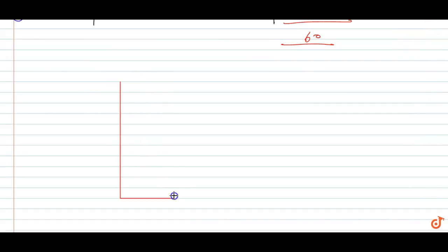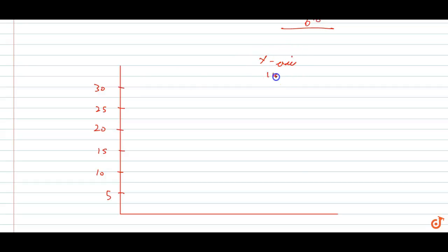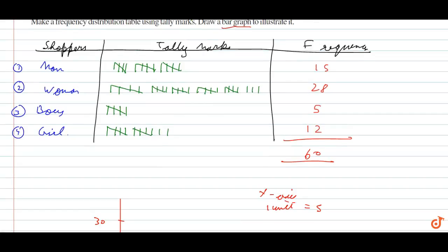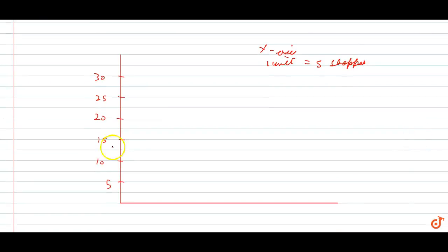We have to draw a bar graph. On the X-axis we place the categories. The maximum value is 28, so the Y-axis interval goes up to 30, with scale: 1 unit equals 5 shoppers — 5, 10, 15, 20, 25, 30. The Y-axis represents the number of shoppers.